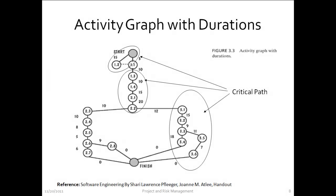This slide shows activities in a project connected together in what is known as an activity graph. The edges represent activities and are labeled with time estimates for each activity. The time units are in days for this activity graph. The nodes denote the ends of each activity and are labeled with the activity number.